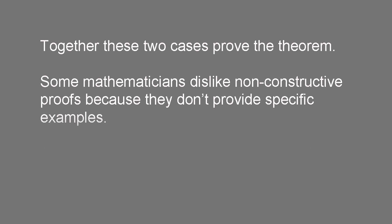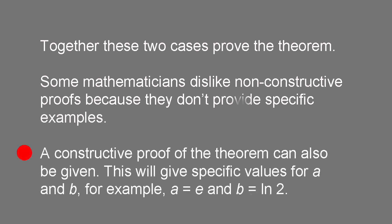It turns out that root 2 to the power of root 2 is irrational because of what's known as the Gelfond-Schneider theorem, but that fact is irrelevant to the correctness of the non-constructive proof. It's also possible to prove constructively the existence of irrational values for a and b that give a rational result.